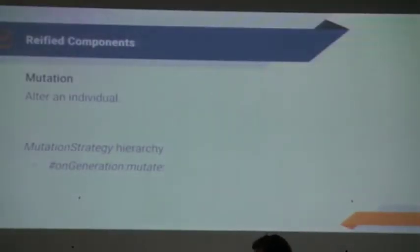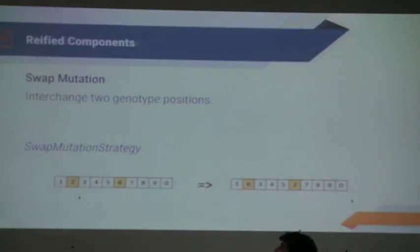Mutation. After you mix the parents, it's time to mutate the individuals. Evelyn supplies three kinds of mutation. One is swap mutation. Take a list of genotypes and swap two positions. In this case, it's a collection of numbers. Take position two and six and swap them.